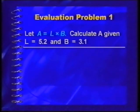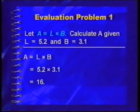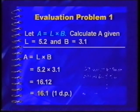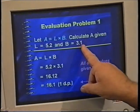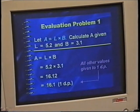The first evaluation problem is quite easy. It is an area formula and we've got L equals 5.2, B equals 3.1, calculate the area. Very easy. In this case, I get 16.12. Perhaps the only thing you want to note about this problem is that I'll give my answer to one decimal place because the values there are given to one decimal place as well.